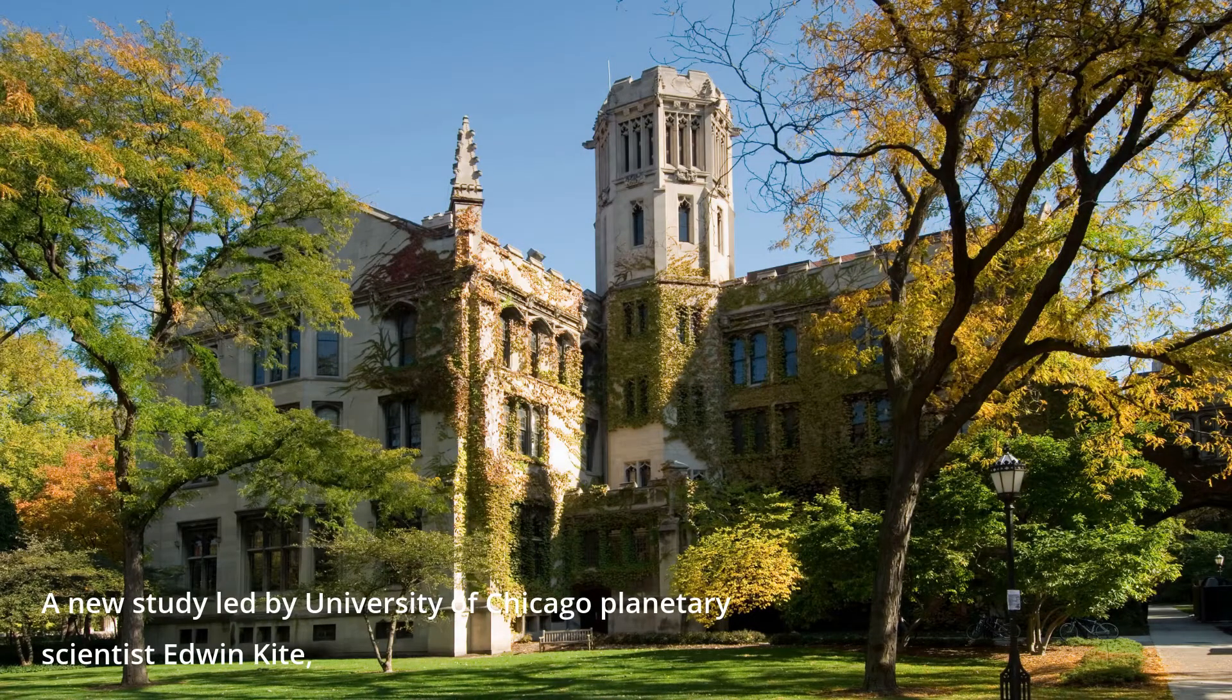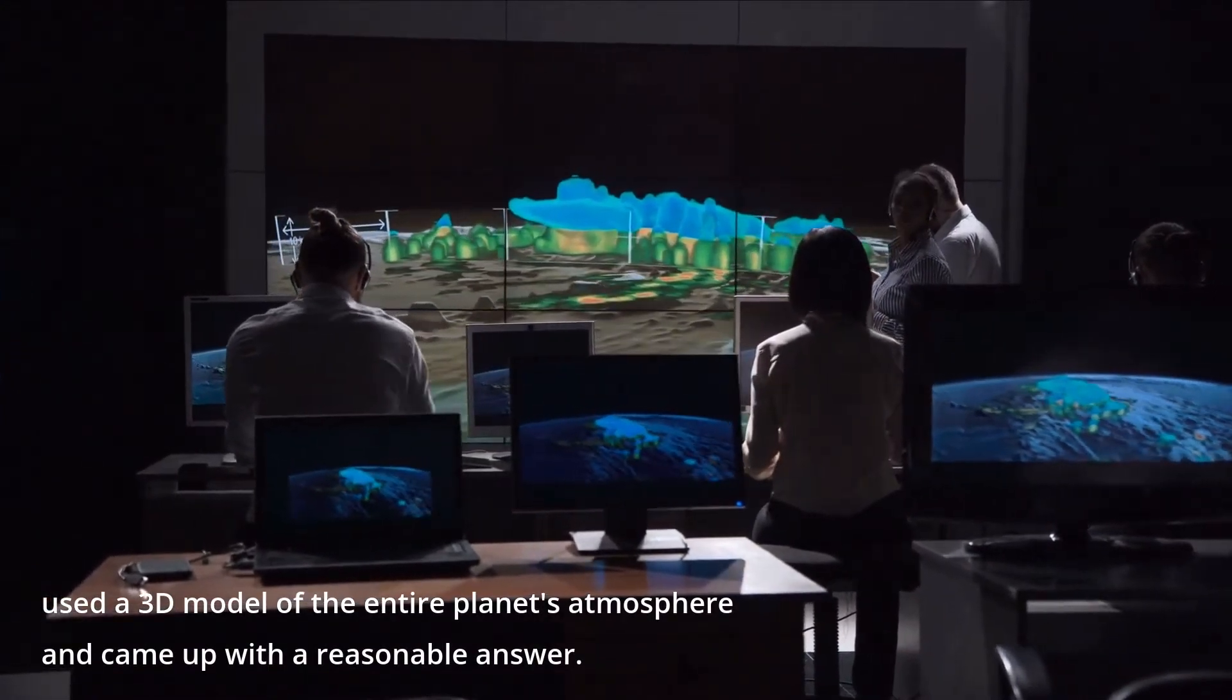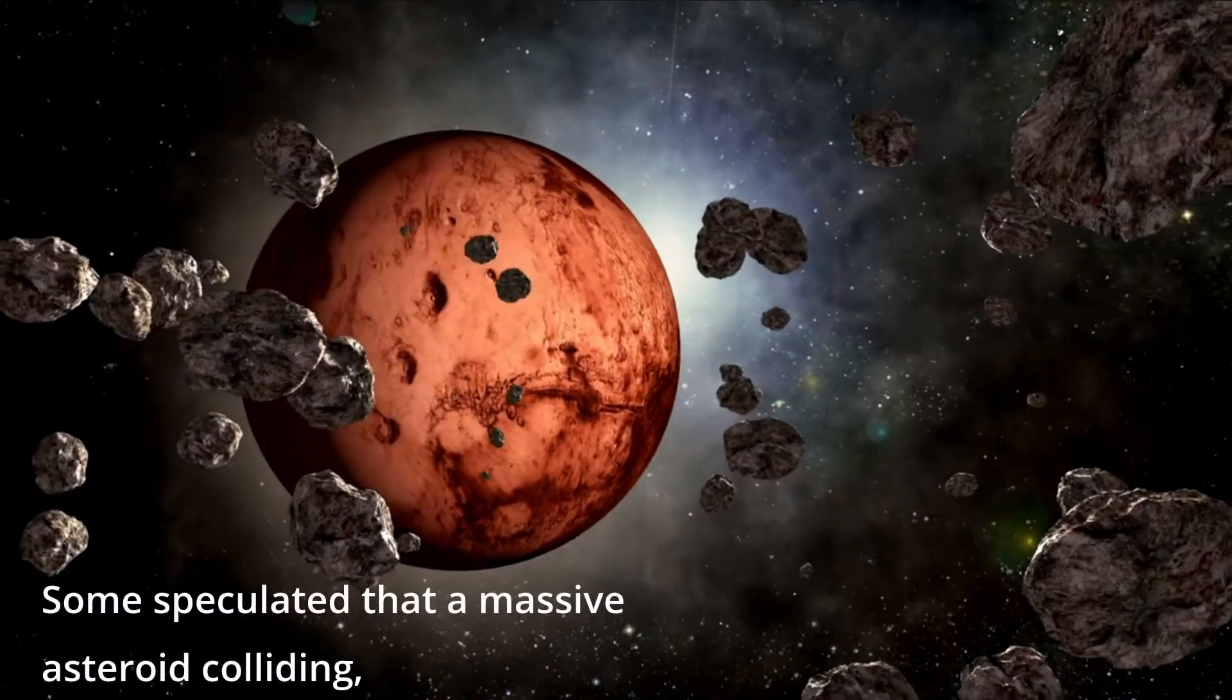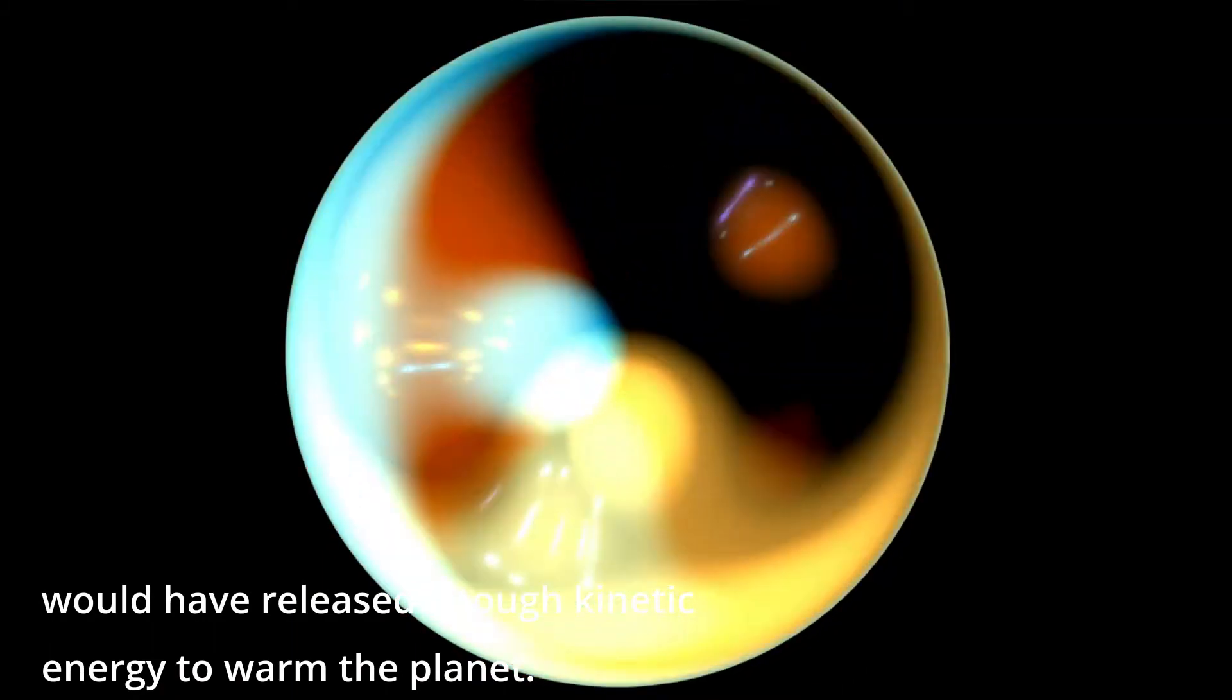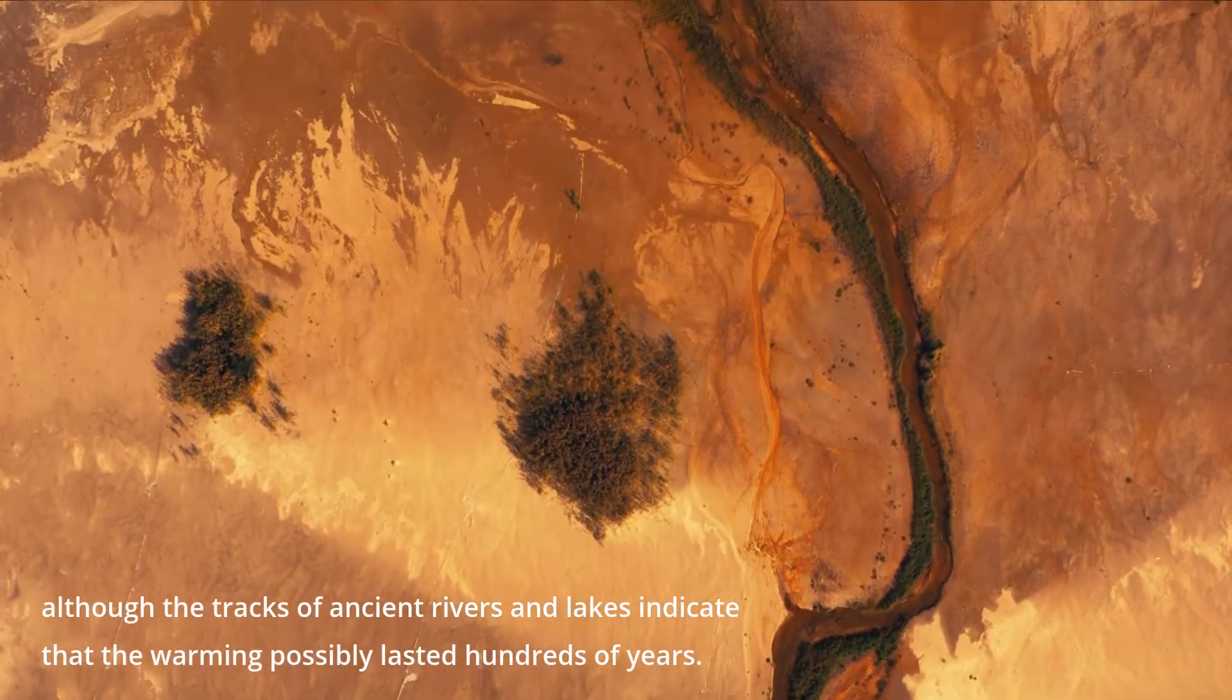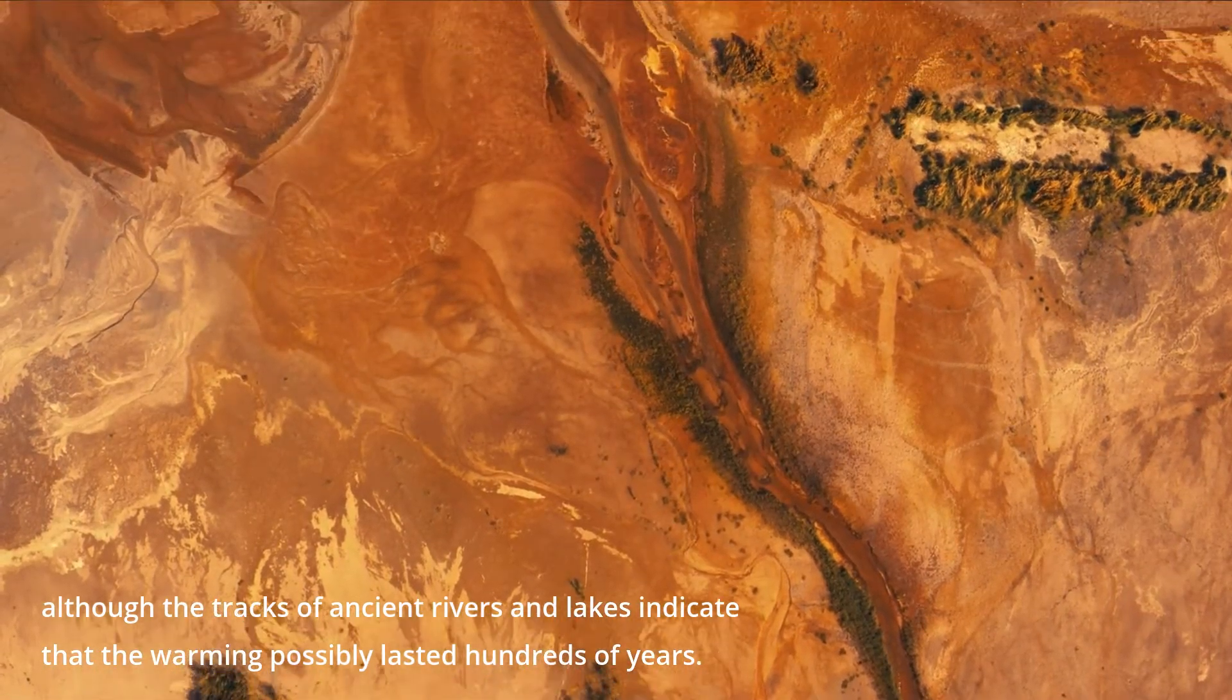A new study led by University of Chicago planetary scientist Edwin Kite used a 3D model of the entire planet's atmosphere and came up with a reasonable answer. None of the previous theories brought by scientists have ever quite worked. Some speculated that a massive asteroid colliding would have released enough kinetic energy to warm the planet. However, some estimates indicated that this impact would last just a year or two, although the tracks of ancient rivers and lakes indicate that the warming possibly lasted hundreds of years.